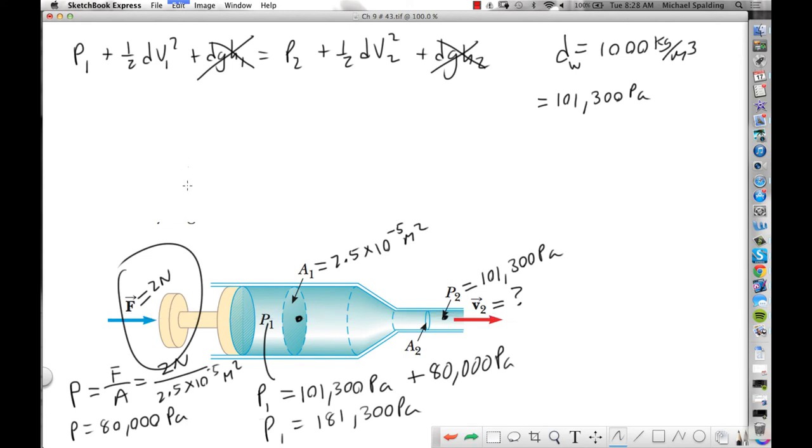All right, what else can we set to zero? Now, a common thing with Bernoulli problems is, look, the velocity of the fluid in the fat part, we'll call that V1. This is region 1. How does V1 compare to V2? Velocity 1 is what? Way smaller, right?